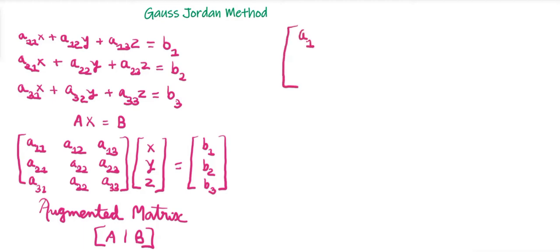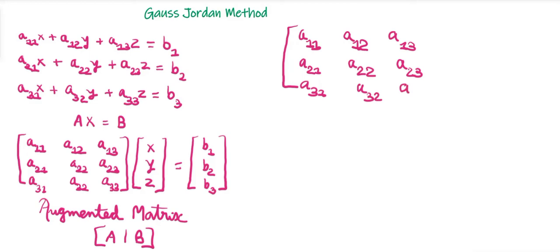We will just copy matrix A: a11, a12, a13; a21, a22, a23; a31, a32, a33. A line in between, and then we will write matrix b: b1, b2, b3.